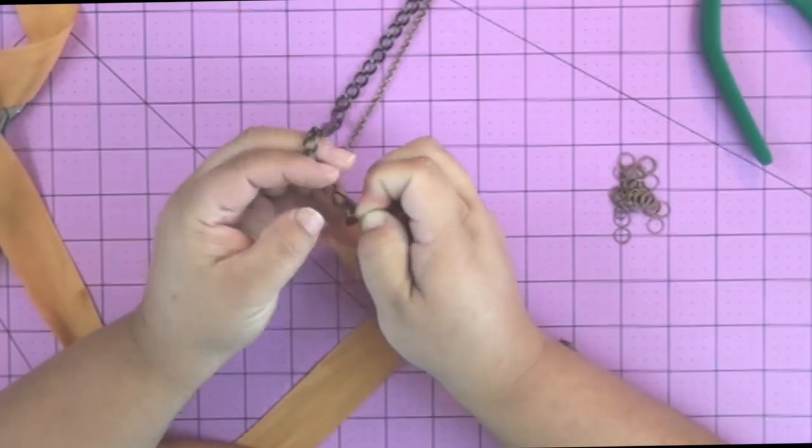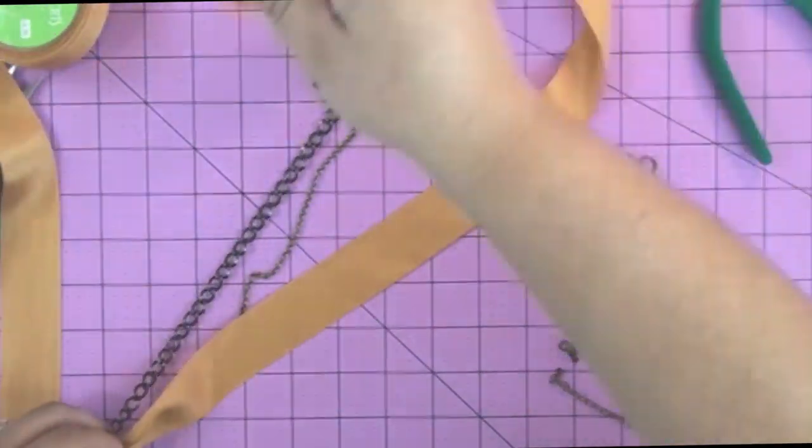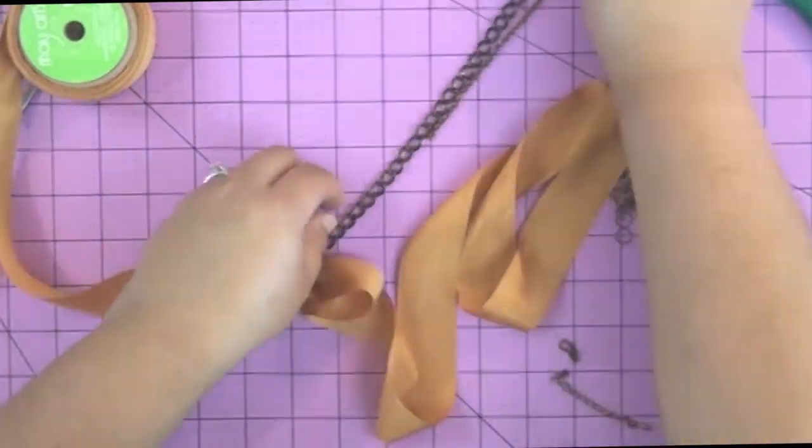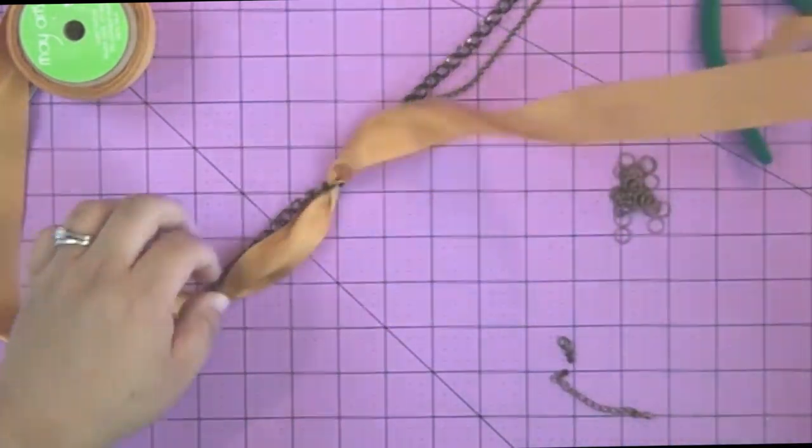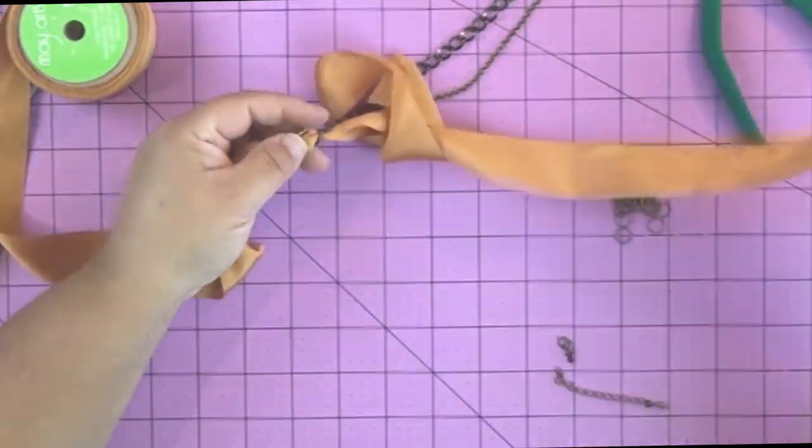Now this is some really pretty silk ribbon that I got from May Arts, and I measured how much I would need—the length of the necklace, the length of the whole chain, plus maybe six inches.